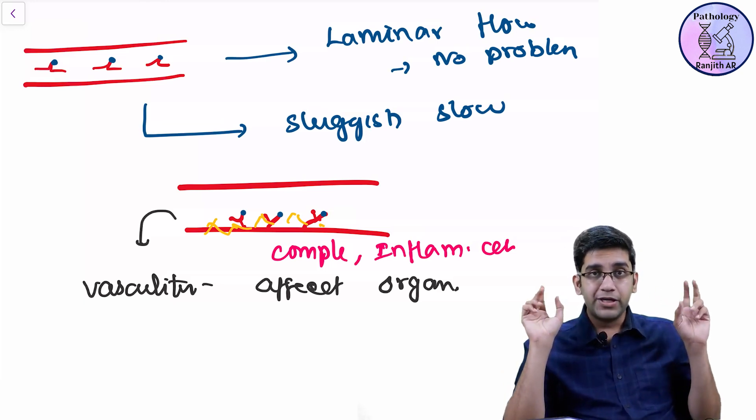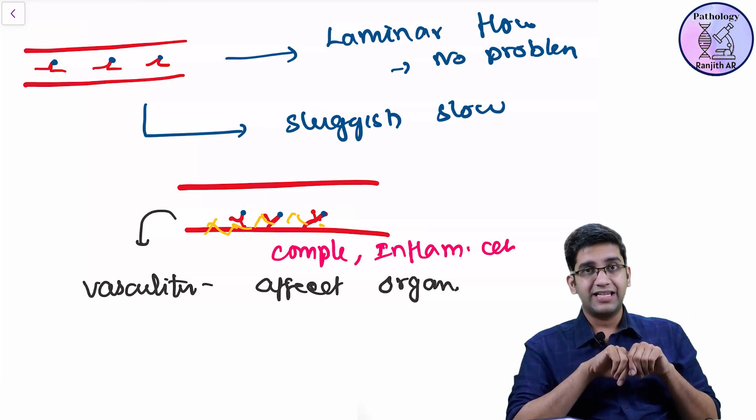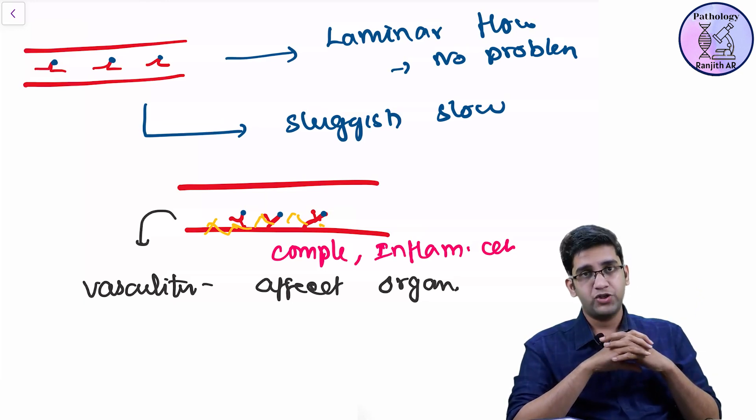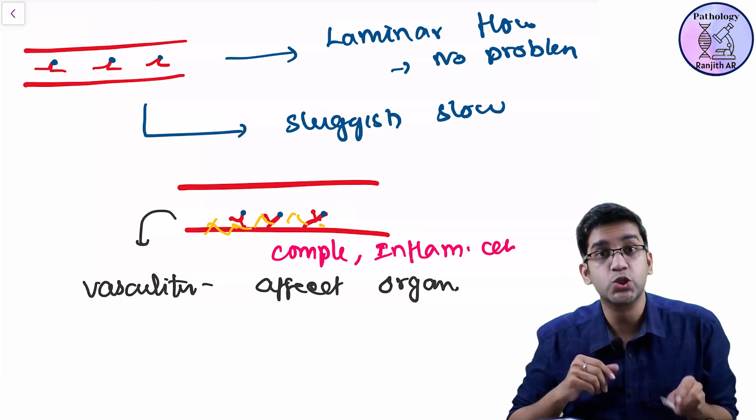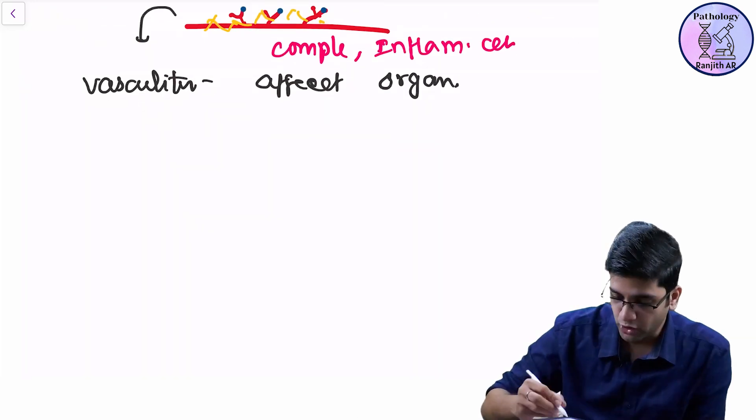In other words, the predominant organs affected by SLE have lots of hairpin-shaped vessels. That's why I'm going to have a trouble.